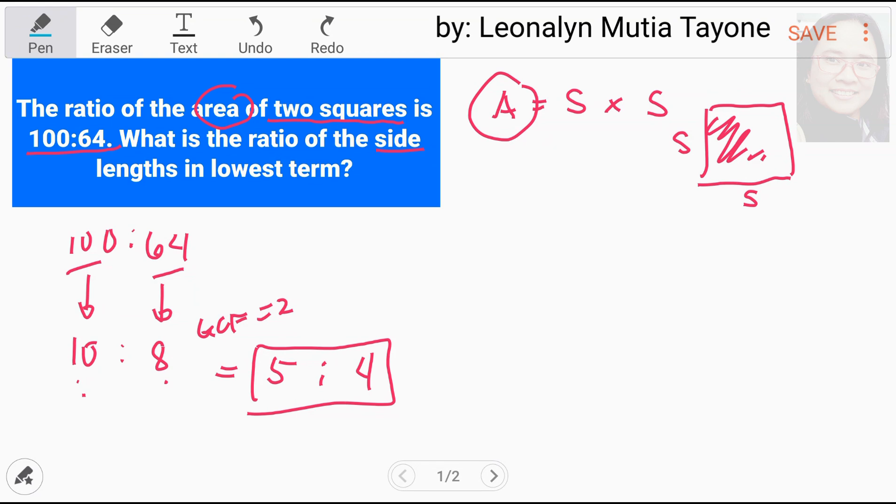Bago tayo mag-proceed sa solution number 2, which is almost the same lang naman sa gagawin natin sa ginawa natin dito sa solution number 1, klaruhin ko lang itong area natin. Area is equals to length times width. Pariho lang yan sa side times side. Kasi square naman yung pinag-usapan natin, yung side naman natin ay pariho lang lahat ng mga length sa sides natin. So, side times side or length times width. Pagdating sa square, pariho lang ang length at ang width.